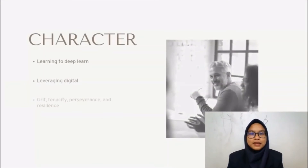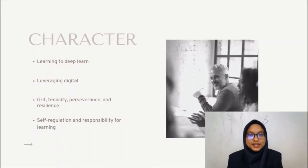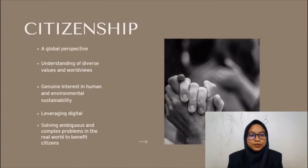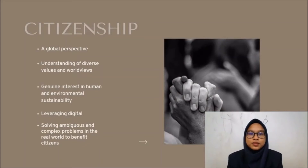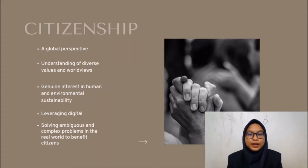The first element in the six Cs is character. Students will be able to gain the knowledge to learn to deep learn, leveraging digital, grit, tenacity, perseverance and resilience, as well as self-regulation and responsibility for learning. Next is citizenship — from deep learning, students will obtain a global perspective, understanding of diverse values and worldviews, genuine interest in humans and environmental sustainability, and the ability to solve ambiguous and complex problems in the real world to benefit citizens.